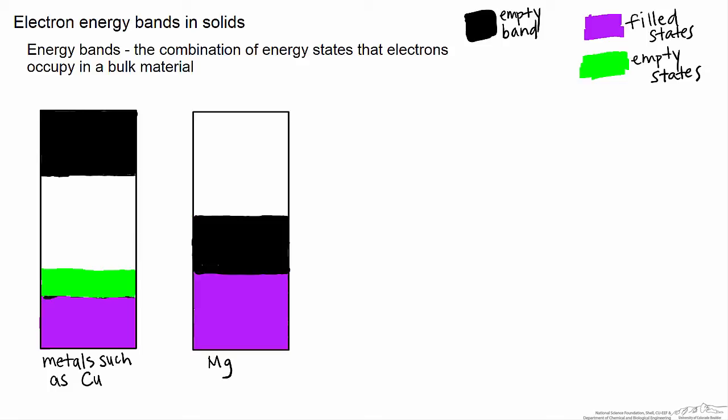The empty band is shown here in black. The next type of material I will discuss is electrical insulators, like silicon dioxide.